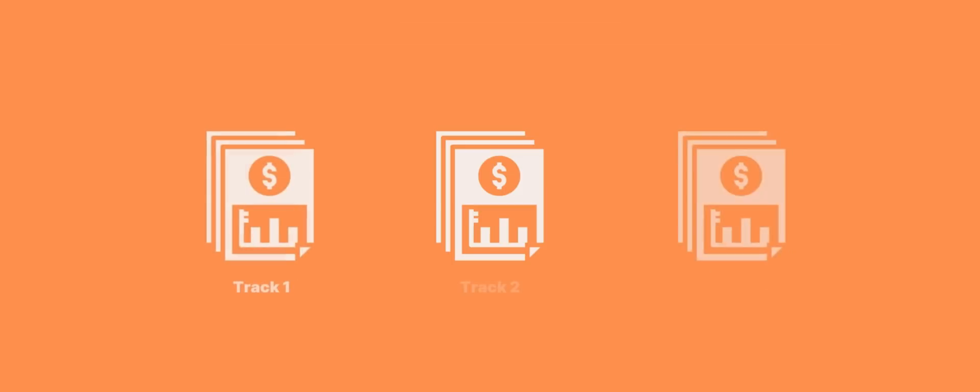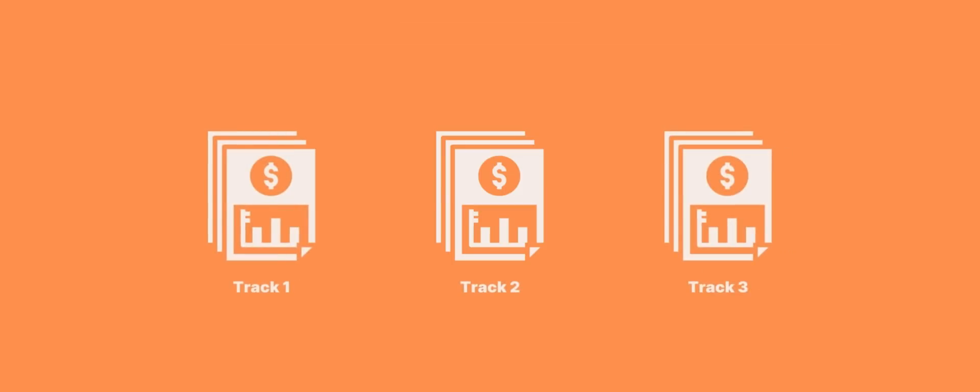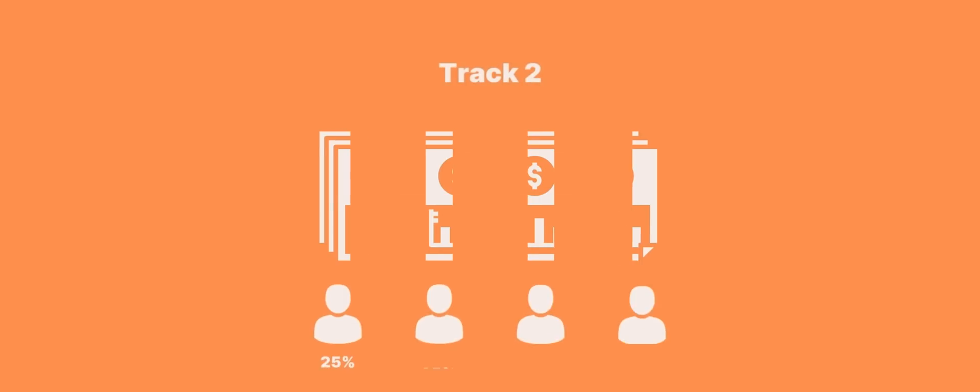A new royalty report is made available each month. Then the royalties get reported for each track. After that, we split the royalties for each team member based on the percentage you've set for each member.